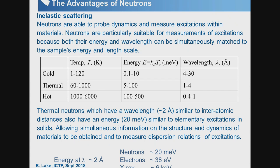Now I want to talk about the advantages of neutron scattering — why one might choose it. The most obvious advantage for frustrated magnetism is the sensitivity of the neutron to magnetic order and fluctuations, to magnetic moments in a material. Besides that, it turns out that the neutron energy and wavelength are very well matched to condensed matter excitations and distances.